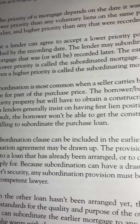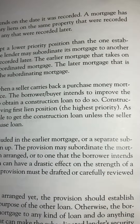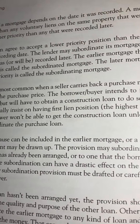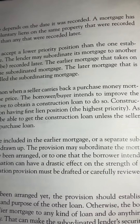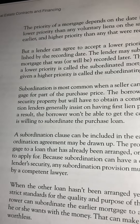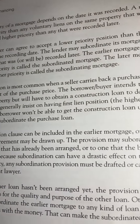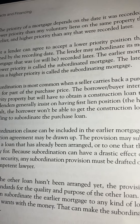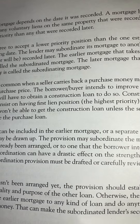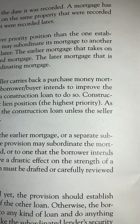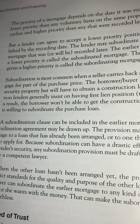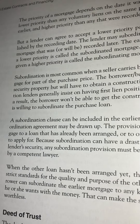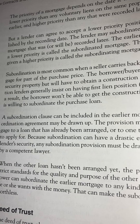Subordination is most common when a seller carries back a purchase money mortgage for part of the purchase price. The borrower/buyer intends to improve the security property but will have to obtain a construction loan to do so. Construction lenders generally insist on having first lien position, which means the highest priority. As a result, the borrower won't be able to get the construction loan unless the seller is willing to subordinate the purchase loan.